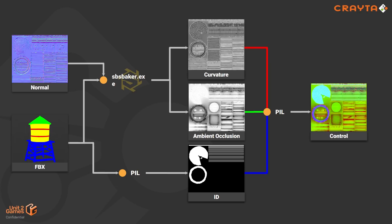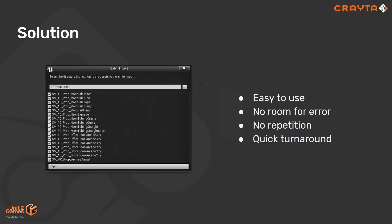The script also handles maintaining naming conventions throughout the entire pipeline and putting assets in the right directories. The nice thing is it all comes down to a very easy-to-use interface — the artist can just select a directory with assets from the latest dump from the outsourcers, click one button, and off it goes. So it's easy to use, there's no room for error, it avoids repetition, and it allows for a very quick turnaround.